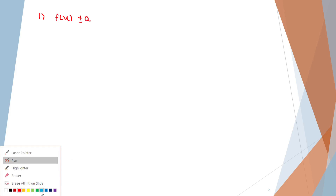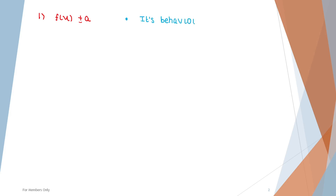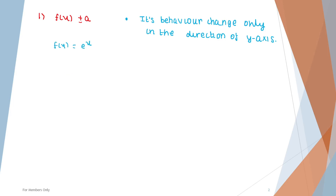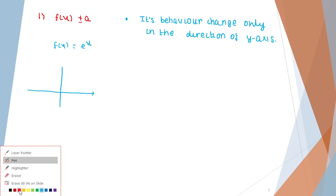Let's begin with the first one: f(x) plus or minus a. When we add a constant outside the function, its behavior changes only in the direction of the y-axis. Let's suppose the function given is f(x) = e^x. We know what the graph of e^x looks like — it touches at infinity and goes like this. It cuts the y-axis at (0, 1).